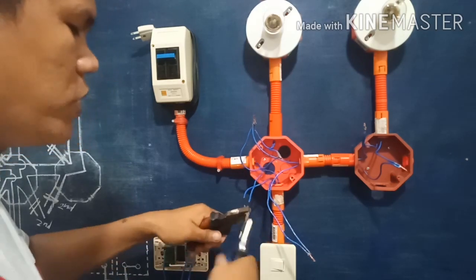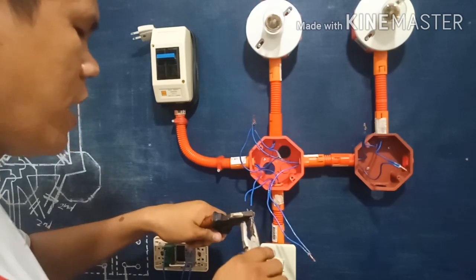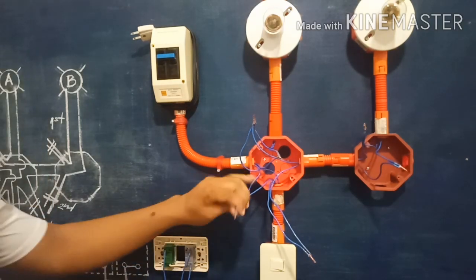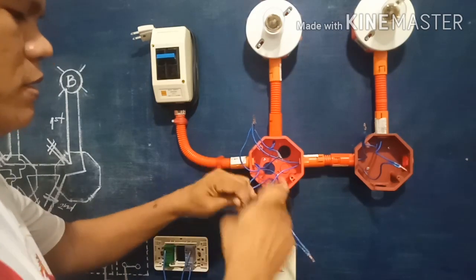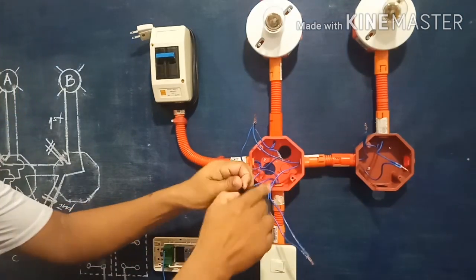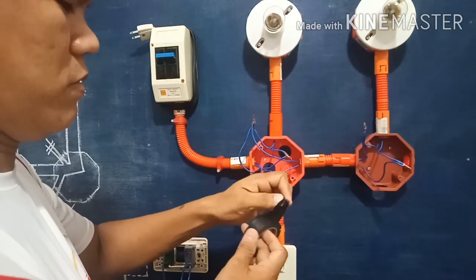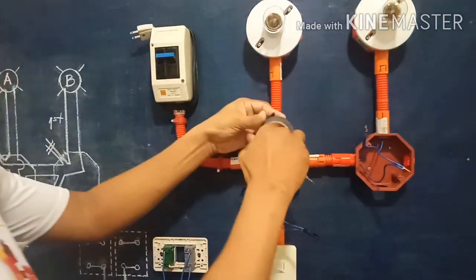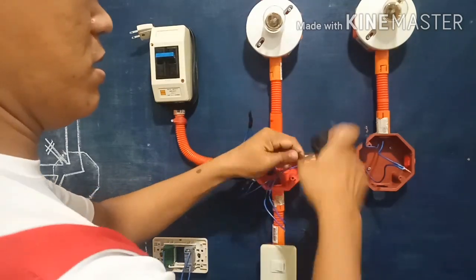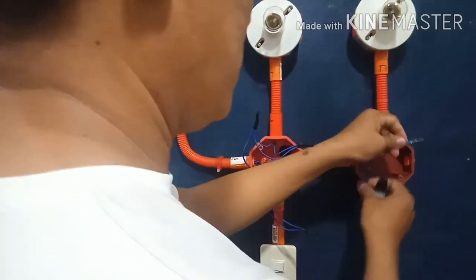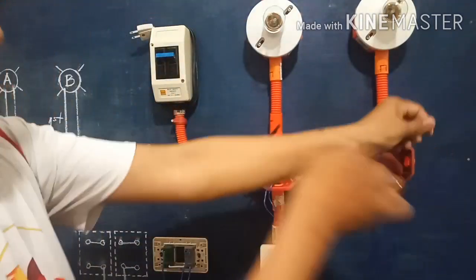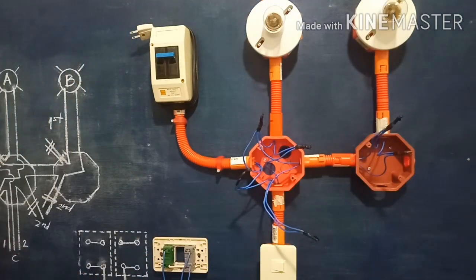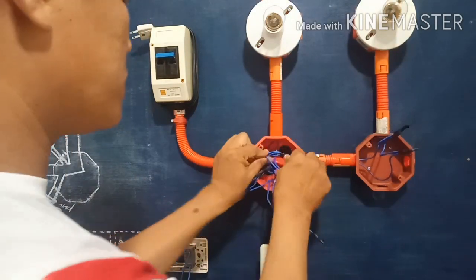This is the last portion of the wiring connection — the third cycle. We will proceed on the installation process. We use electrical tape on the connections. Then we insert the wiring connections into the junction boxes.